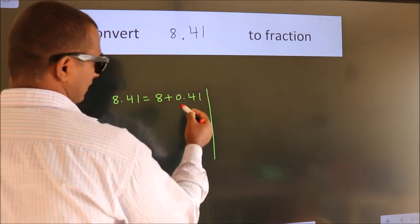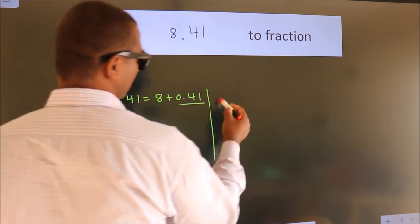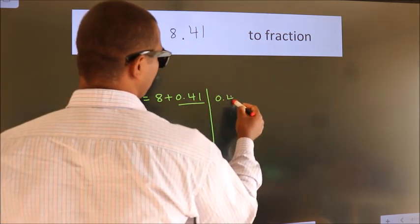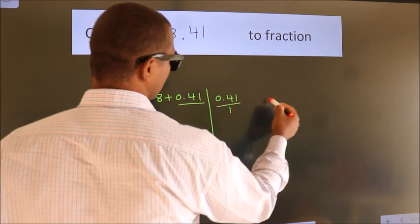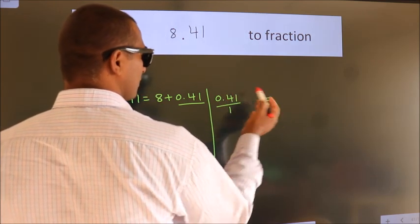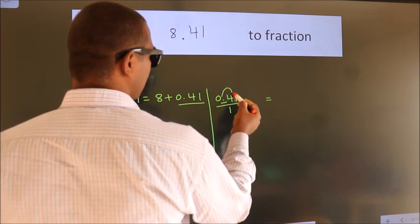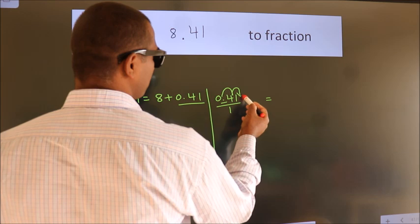Next, convert this to fraction. So 0.41. To convert this to fraction, we have to move the decimal after 2 numbers.